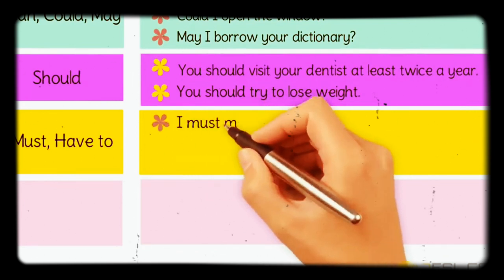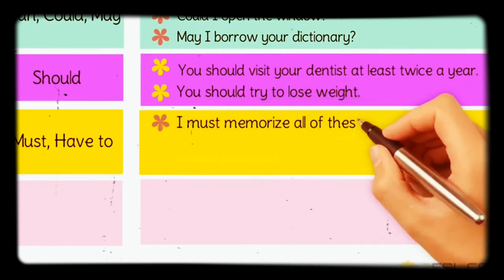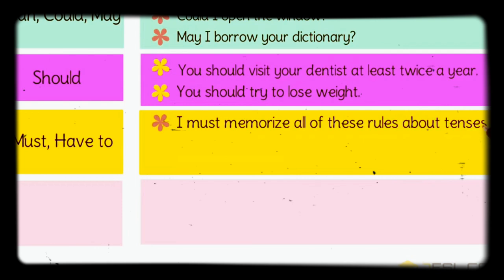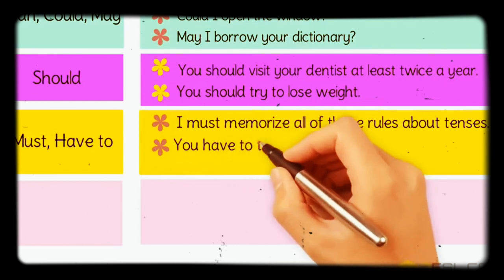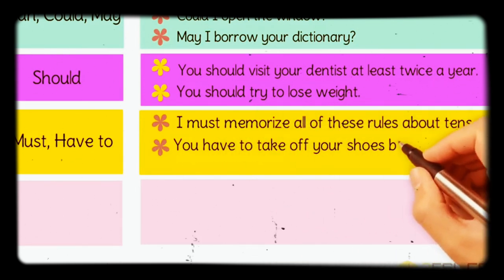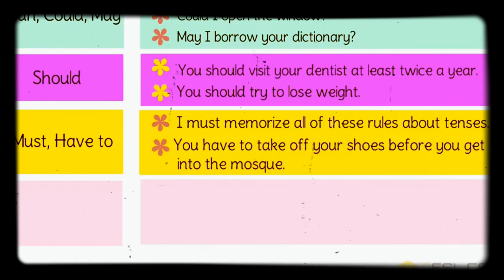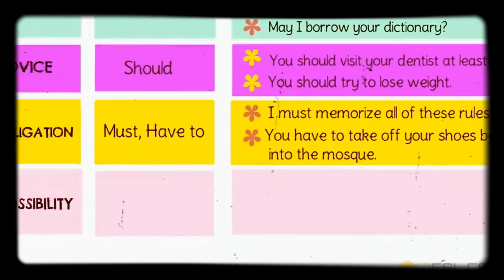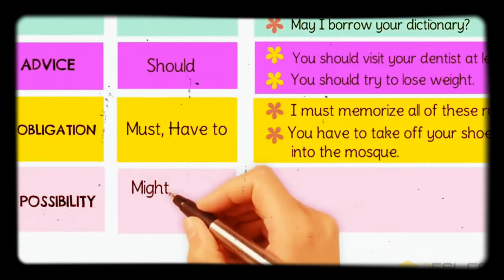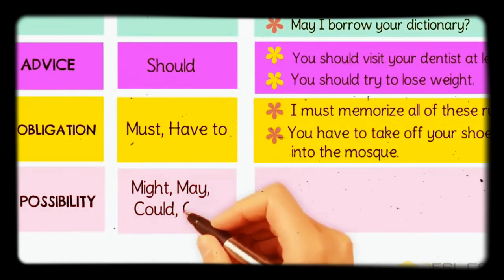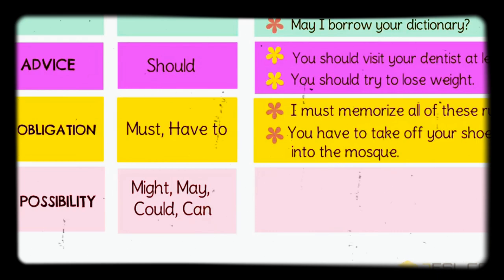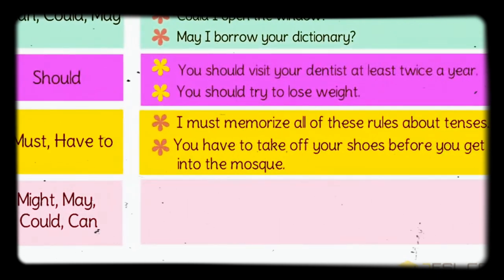Obligation means responsibility. You use 'must' with moral obligation or personal responsibility: 'I must memorize all these rules about tenses.' 'Have to' also expresses responsibility but has more external force: 'You have to take off your shoes before you enter the mosque.' You can also use 'should' and 'must' for responsibility.